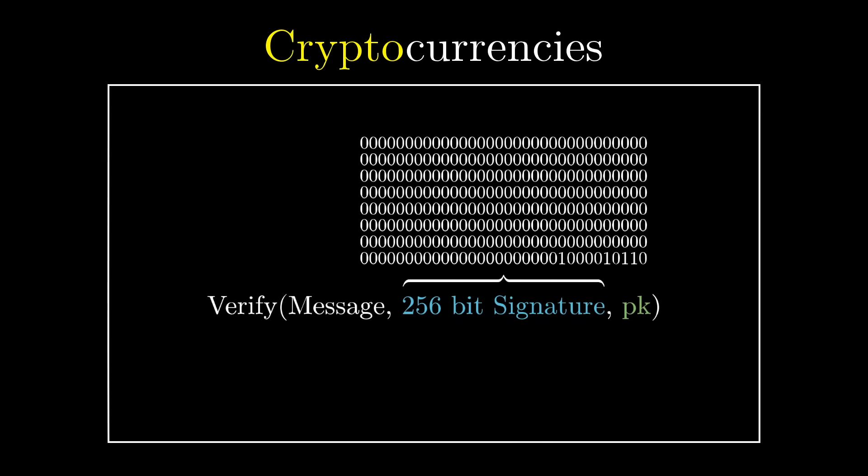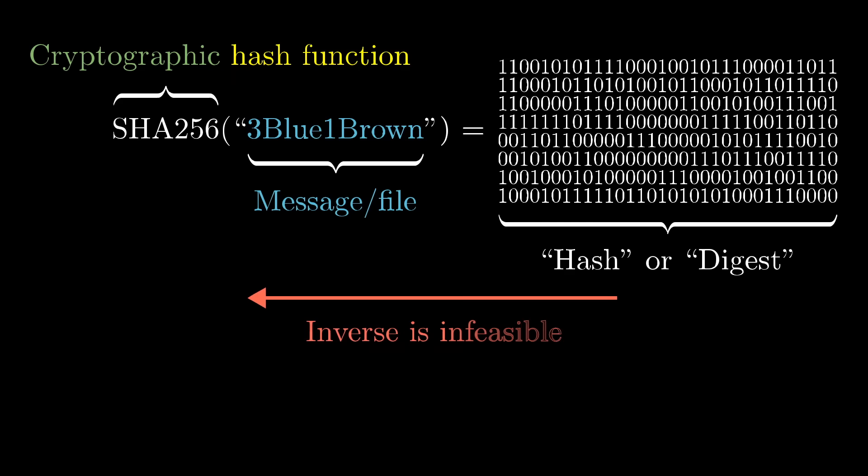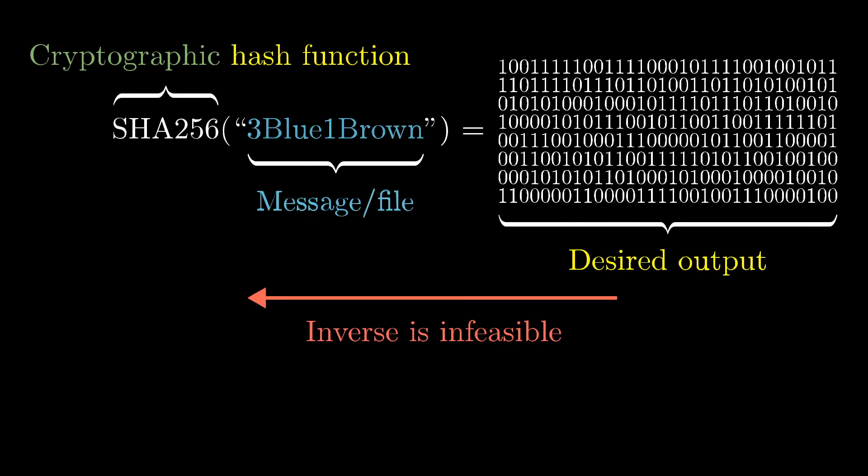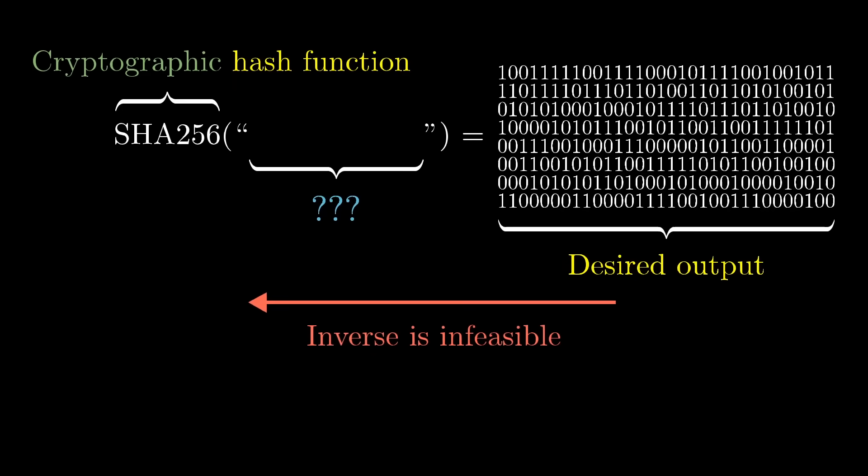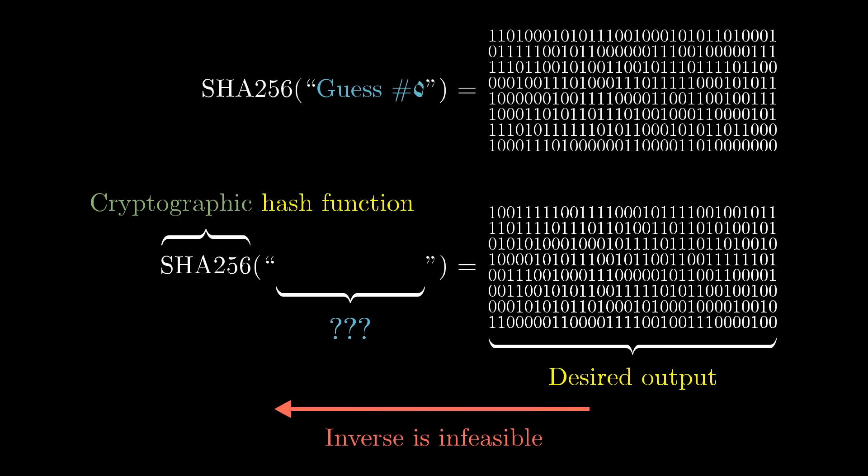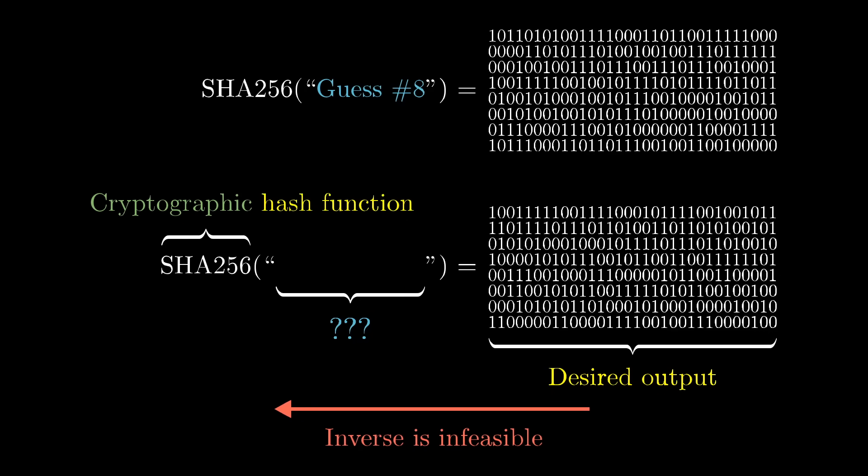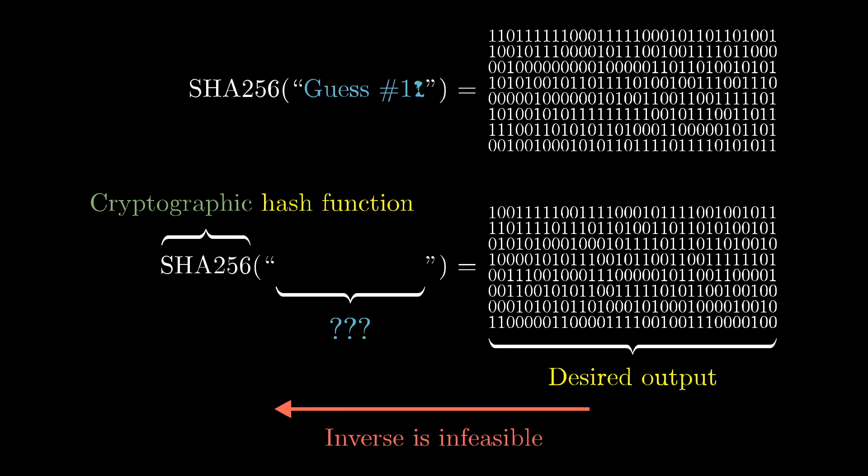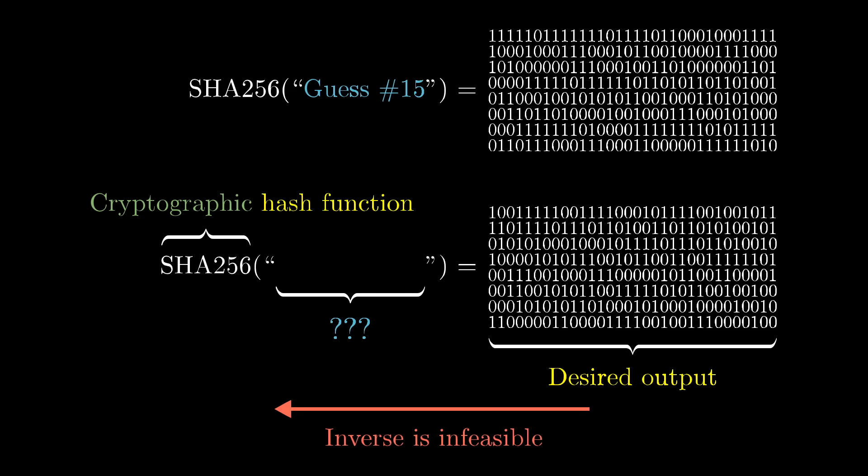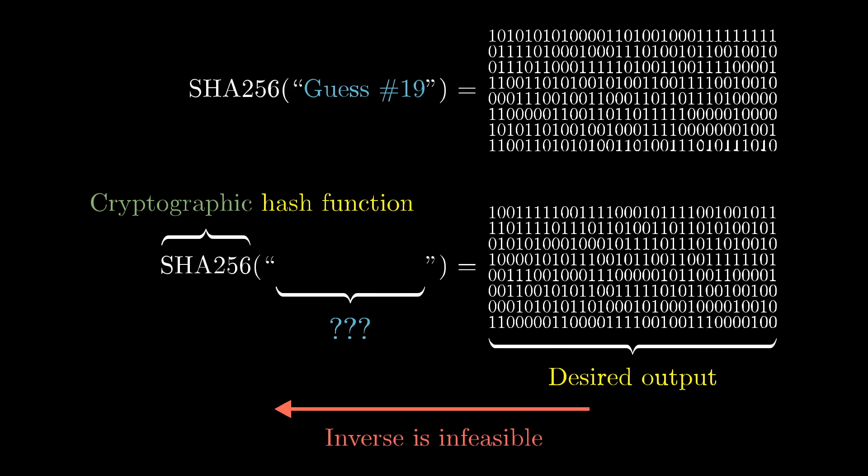One of these was in the context of digital signatures, and the other in the context of a cryptographic hash function. For example, if you want to find a message whose SHA256 hash is some specific string of 256 bits, you have no better method than to just guess and check random messages. And this would require, on average, 2 to the 256 guesses.